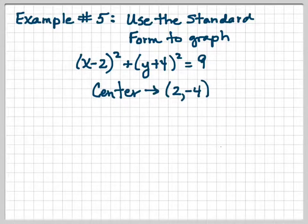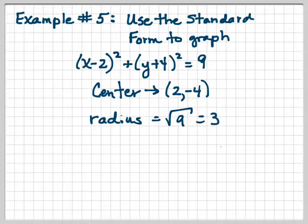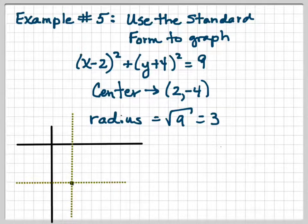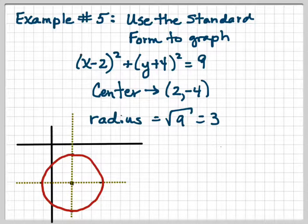The center will be at 2, negative 4 and the radius will be at the square root of 9 which is 3. Because remember that 9 represents r squared. So if I want to first find my center, which is at 2, minus 4, then I'm going to go ahead and draw my little auxiliary lines to keep my eyes moving in the right direction. And I'm going to plot my points 3 up, 3 down, 3 left, 3 right, and draw my circle.